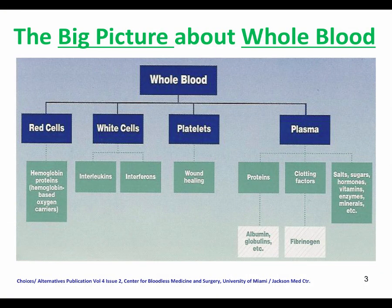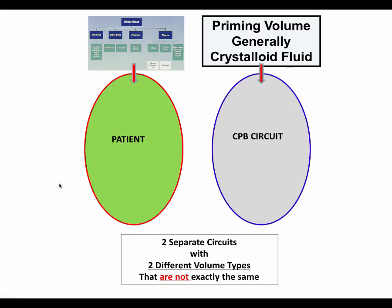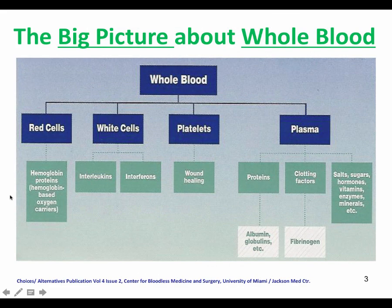It's about whole blood. To review, whole blood consists of its cellular components: red cells, white cells, and platelets. The red cells contain the hemoglobin, which is the oxygen carrier in the blood. White cells consist of interleukins, interferons — all these components are part of the white cell package. And platelets contribute to wound healing.